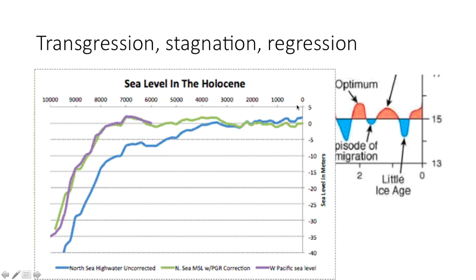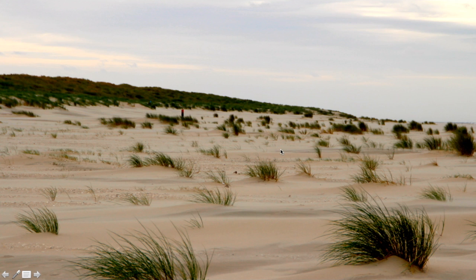Here we see the sea level rise compared to the temperature rise: rapid in the beginning — that's the early Holocene already covered — then a slow, steady sea level rise very important for the west of the Netherlands, then stagnation, then sea level rise again very important for depositing material in the Netherlands, then more or less stable, and now it's rising again.